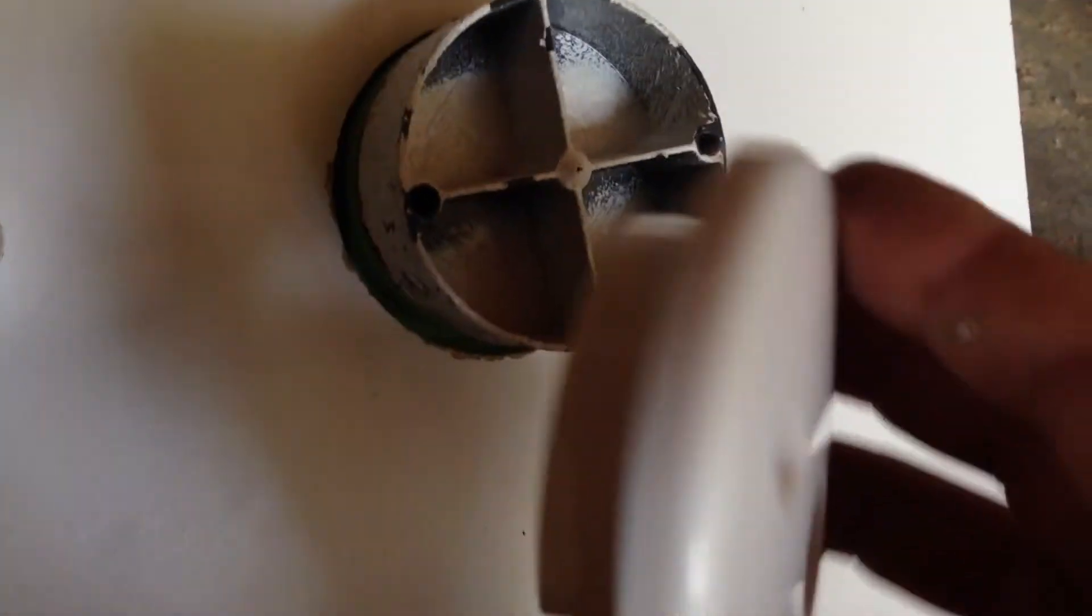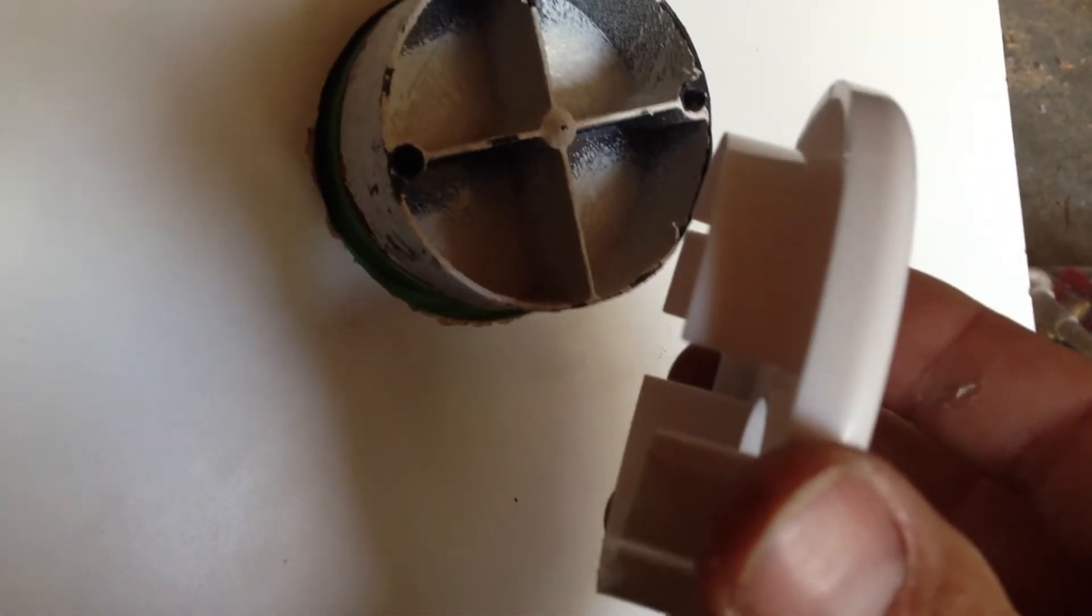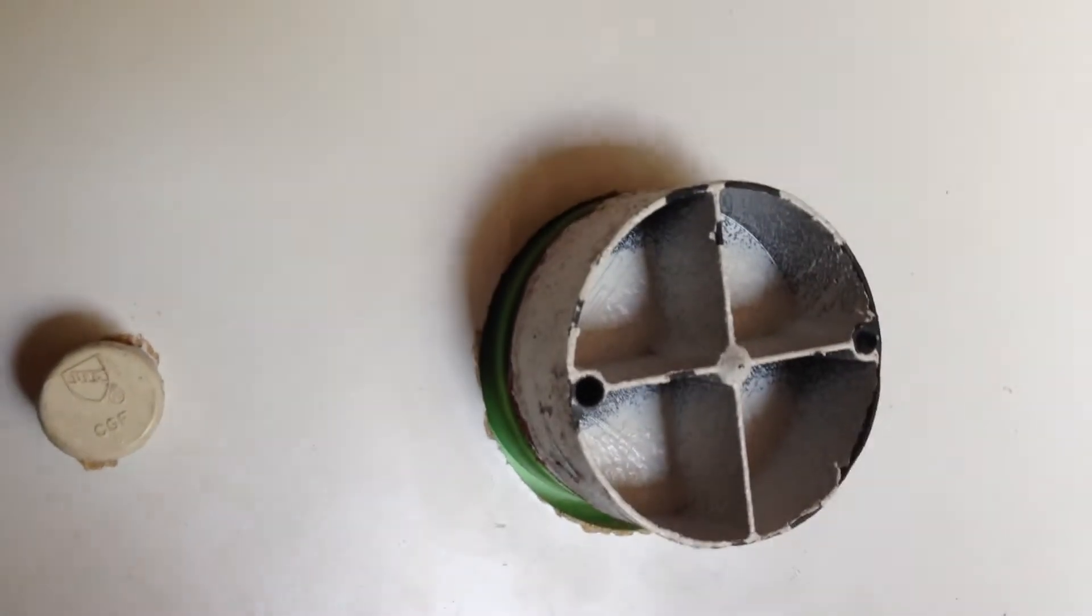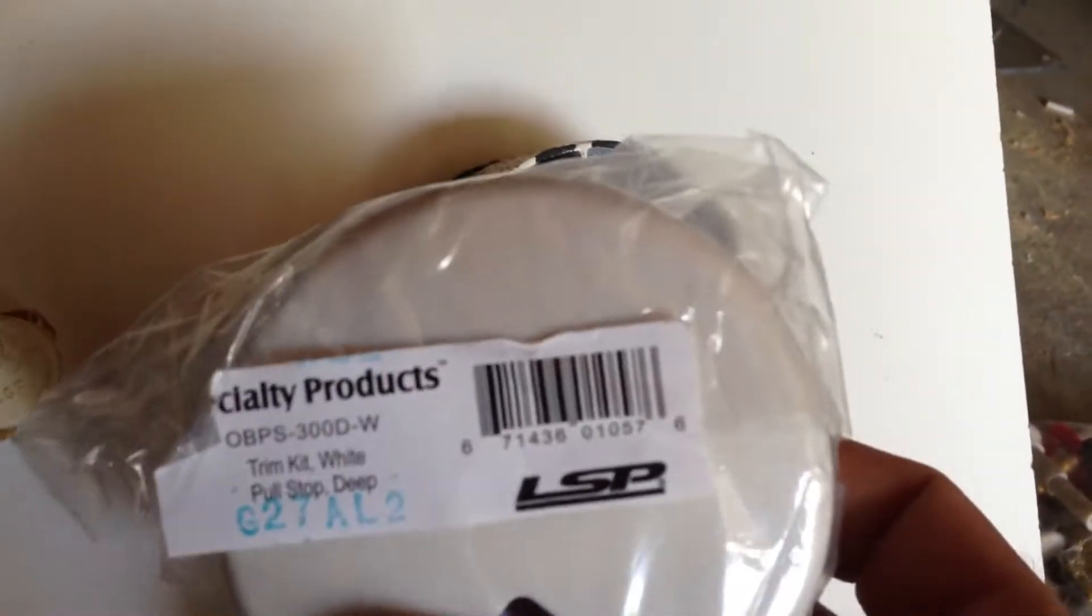There's two types of escutcheons or trim kits available. We have the shallow or regular trim and then we also have your deeper trim kit if you do have double drywall or backs on cabinets. They come individually bagged with the handles included.